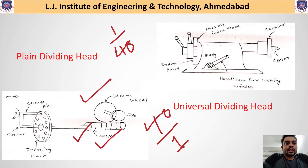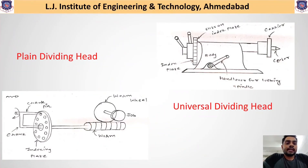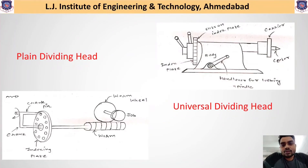In summary, the plain dividing head is useful for only 12 to 24 equal divisions on the workpiece, whereas the universal dividing head is helpful for more than 24 divisions on the workpiece.